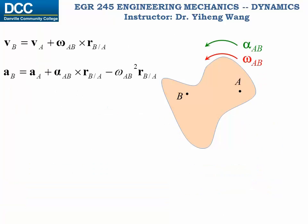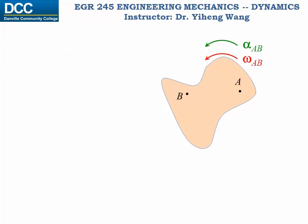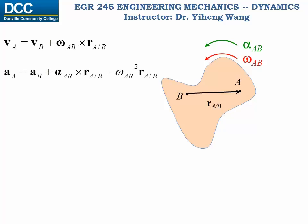You can write these two equations for any two arbitrary points that belong to the same rigid body undergoing general plane motion. When writing these equations, you always choose a reference point — in our case point A — and the relative position vector is always drawn from the reference point. It represents the relative position of point B with respect to point A. On the other hand, if we choose point B to be the reference point, we can draw the position vector from B to A and write equations to find the linear velocity and acceleration of particle A.